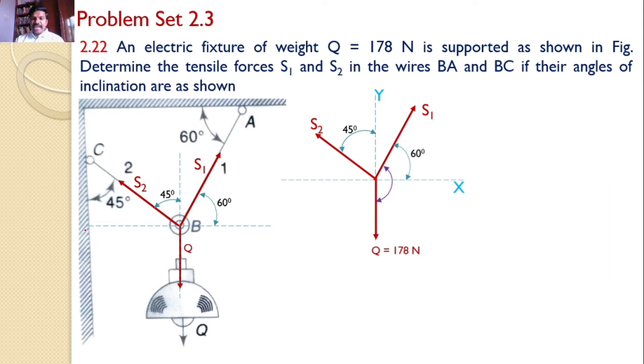Now, in order to apply the sine rule, we require the angle between the two adjacent forces. What is the angle between S1 and Q? Since the angle between S1 and X axis is 60 degrees, the angle between S1 and Q becomes 60 plus 90, that means 150 degrees. Similarly, the angle between S1 and S2.